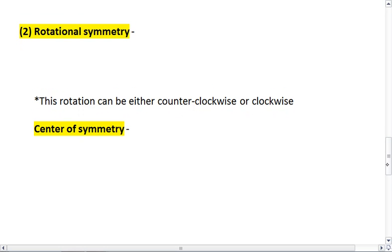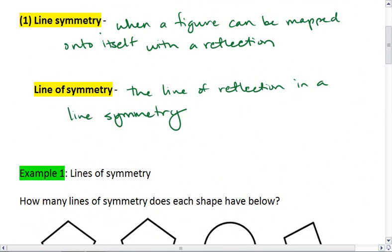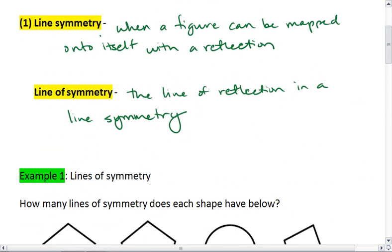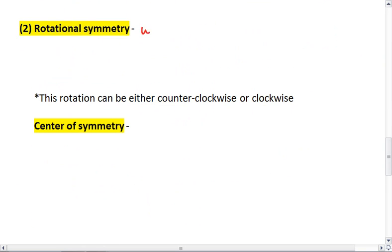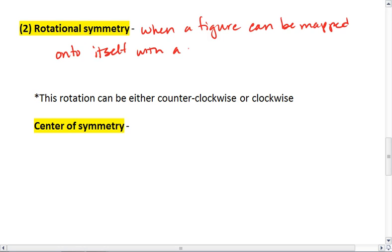Rotational symmetry - so let's look at this. Line symmetry was when a figure can be mapped onto itself with a reflection. Rotational symmetry is when a figure can be mapped onto itself with a rotation.